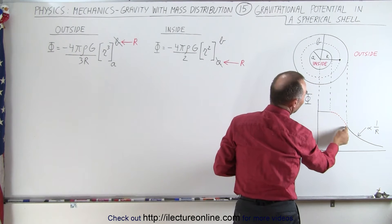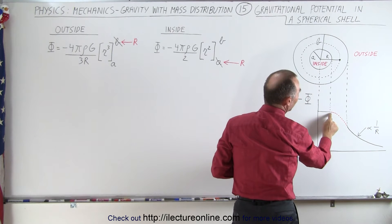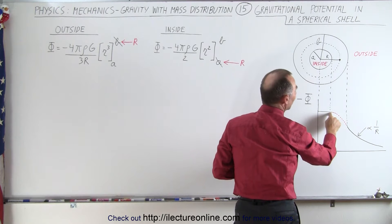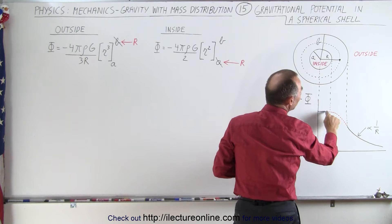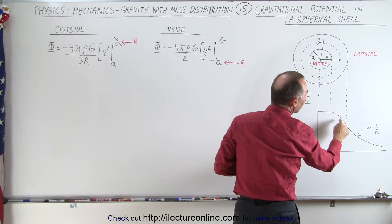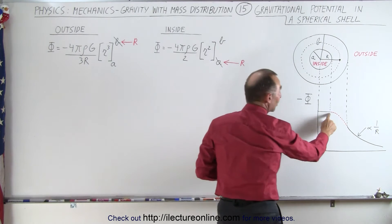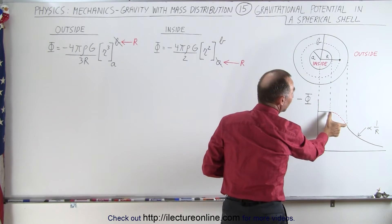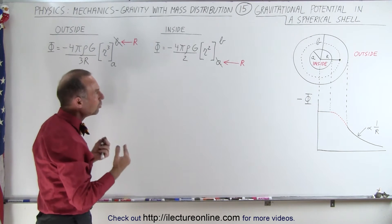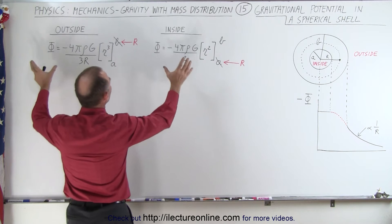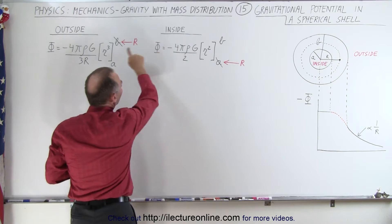We now have to find the equation that describes the curve connecting these two regions. Notice that we need the exact same value at A and the exact same value at B, and we also need to make sure the derivative — the slope — at those two points is exactly the same. In other words, the values and slopes of the equation must match at both boundary points.